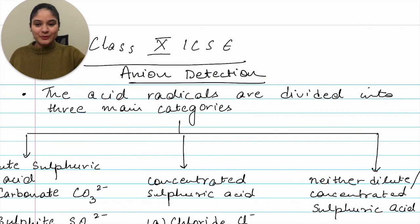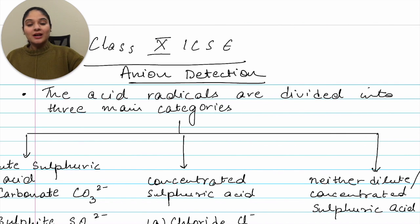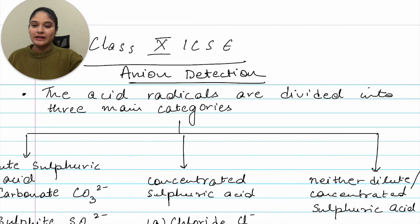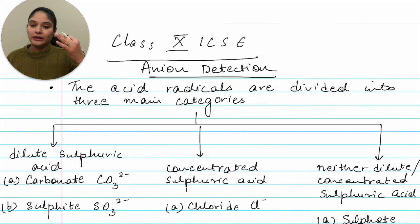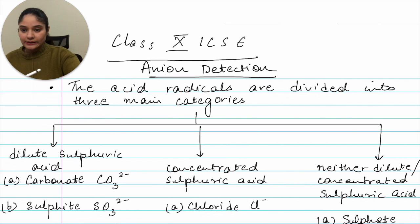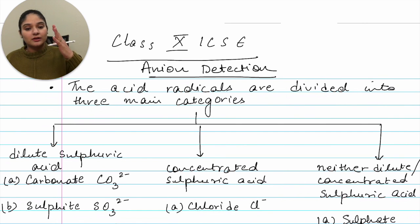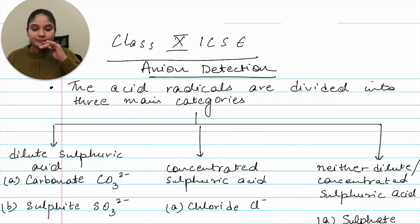In this particular video we'll work on the basic understanding, the equations, the different types of gases, what their unique characteristics are, and we'll also work on a few important questions for you today. So let's get started with anion detection. We can divide acid radicals into mainly three categories. The first is reacting with dilute sulfuric acid, the second is concentrated sulfuric acid, and the third is neither concentrated nor dilute sulfuric acid.